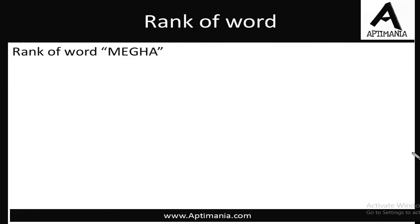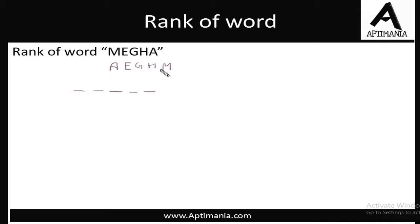Now let us start with the example. We need to find the rank of the word Mekha. We will first arrange the letters in alphabetical order: A, E, G, H, and then M. All words are assumed to be five-letter words — we won't be making any two, three, or four letter words. The first word will start with A. Now A is not required at the first position in the original word, so we fix A at this position and arrange the remaining four letters in four factorial ways.